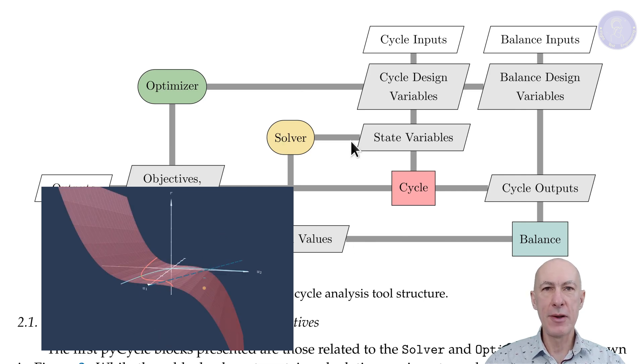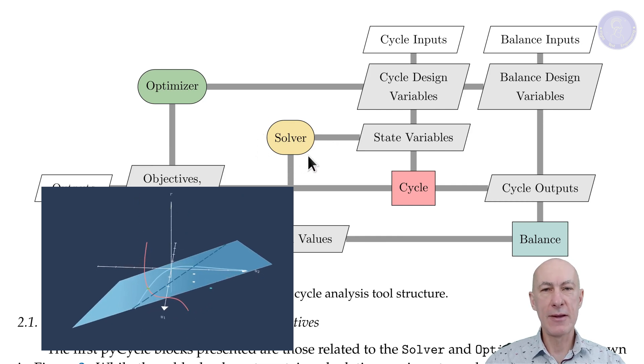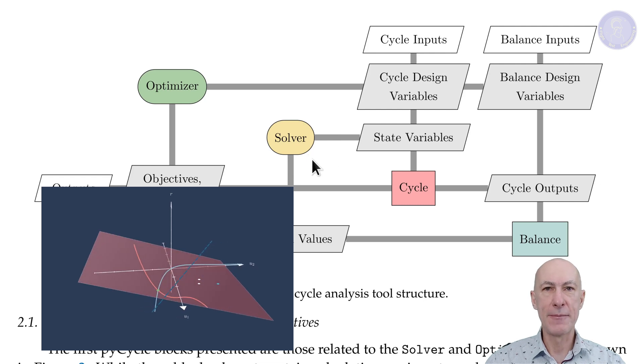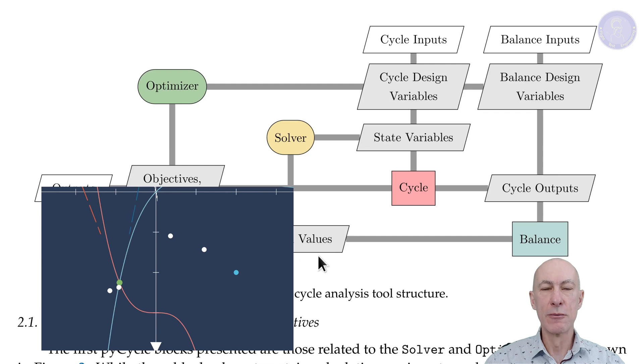And it will do that using pretty advanced math routines. For example, it will change the flow through the fan to match whatever is coming out of the inlet nozzle. And by doing so, find a pressure rise that is compatible with the fan map. But this does not mean that the engine solution is the solution we want.